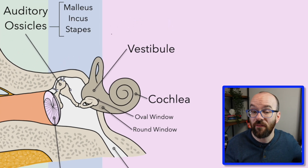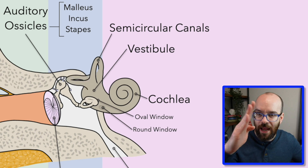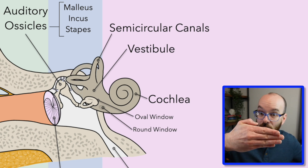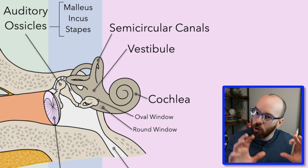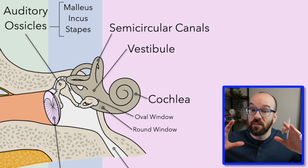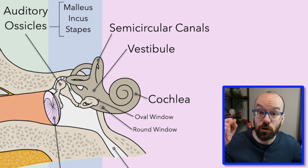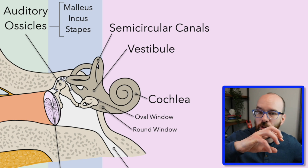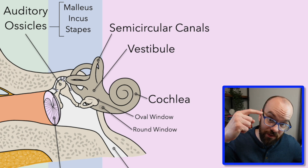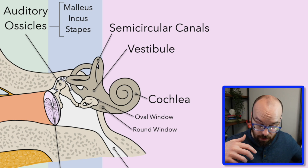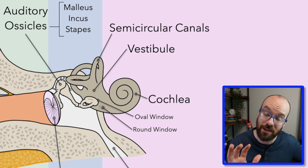Also connected to the vestibule are the semicircular canals — we have three of them. Notice how they're oriented at 90-degree angles to each other, corresponding to the three spatial dimensions. The purpose of the semicircular canals is to detect our balance. If your head tilts suddenly, fluid and structures inside the semicircular canals shift, sending a signal to the brain and causing you to jerk back alert. Having three canals lets us detect balance in all three dimensions.